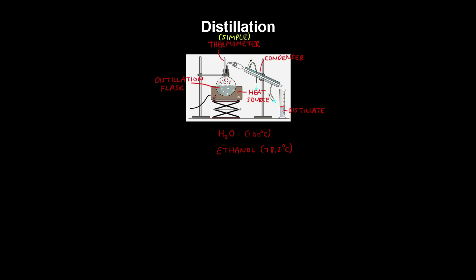A similar technique known as fractional distillation uses staggered ridges in the tube which are close together. At 78.2 degrees, which is less than the boiling point of water, the water vapor is going to condense and get caught onto the ridges to avoid dropping back into the sample, and it's going to evaporate again. This enables multiple cycles of simple distillation and avoids running those simple distillation cycles manually over and over.